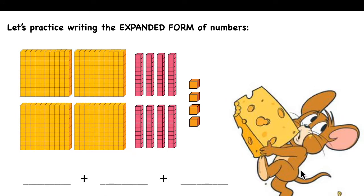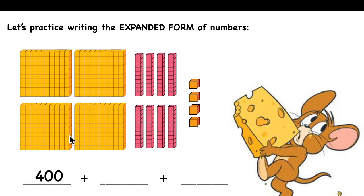Let's practice. How do we write this number in expanded form? Expanded form is the form written as an addition sentence where we add hundreds, tens, and ones separately. We will start always from hundreds. How many hundreds do you see? I see four hundred. How many tens can you count? 1, 2, 3, 4, 5, 6, 7, 8. Eight tens — 80.